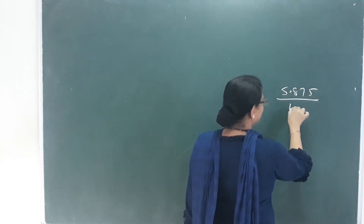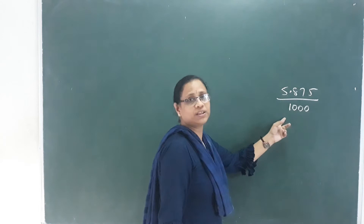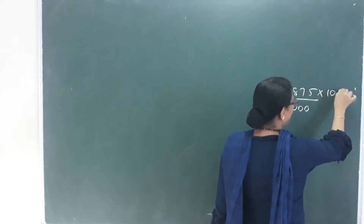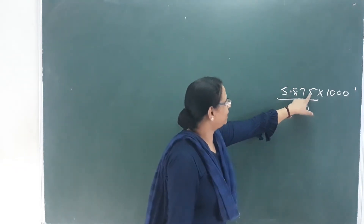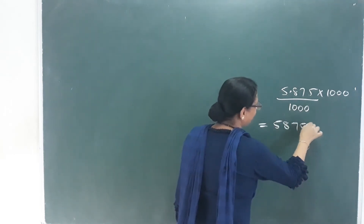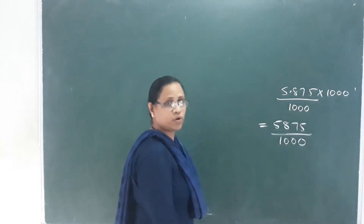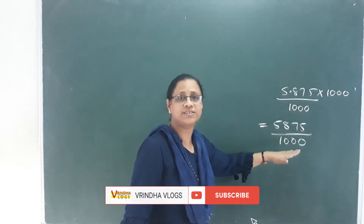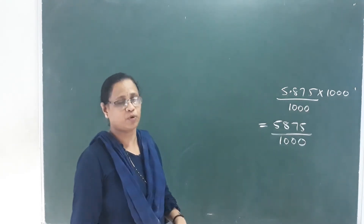We have 1, 2, 3 — 3 decimal places. I have the tenth here. That means 1,000. Then multiply it. Multiplying will not change the value. Going to this decimal: 5, 8, 7, 5. We are going to cut these two digits in the shortest form, as we have learned about simplest form. Start with these factors.